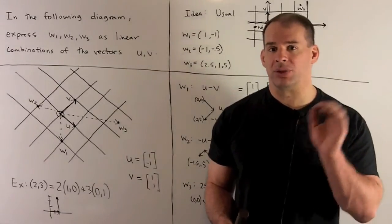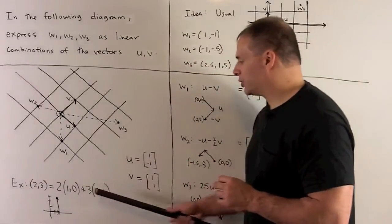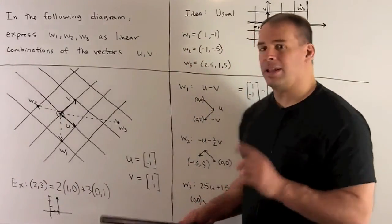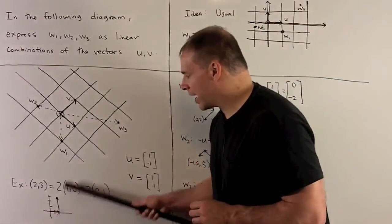So if I want to get to the point (2, 3) from the origin, we're just going to break things up into a linear combination. Then, the geometry is, we're just moving along a rectangular grid.